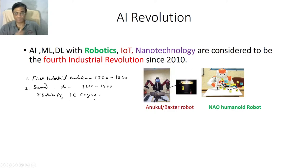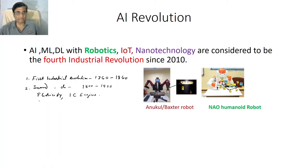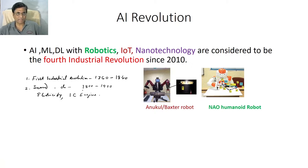You see the internal combustion engine everywhere — car, bus, truck, scooter — everywhere. And electricity: motors, household devices, all these started during this time and they started transforming society. That is called the second industrial revolution.